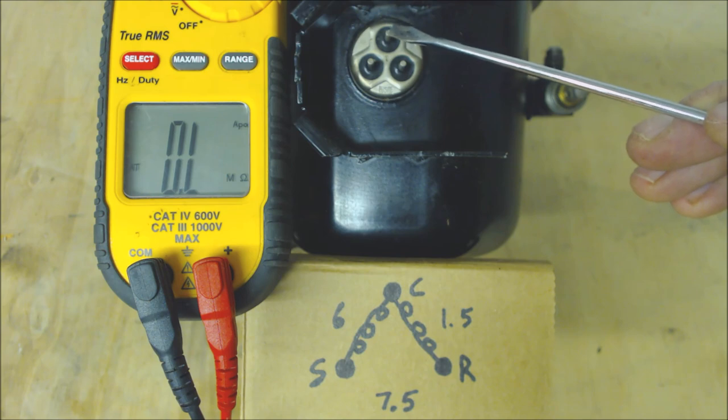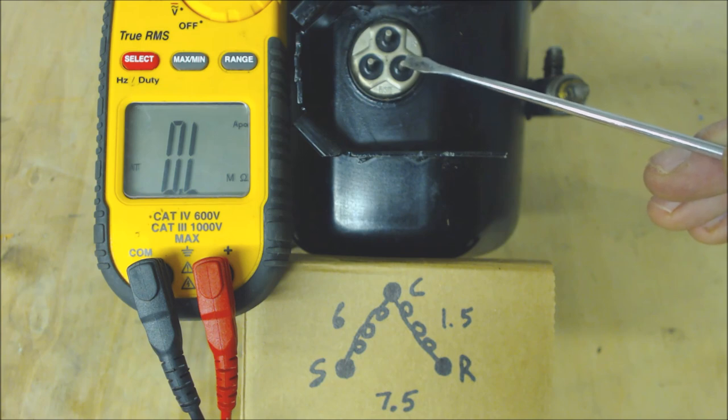And your lowest resistance reading was between here and here. And since we know this is common and this is start, then that means that this is run. So you see that our resistance readings matched up.